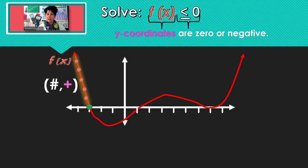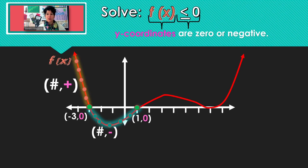Running through: those were positive, and there it's 0. Along here, negative. And right there, 0. So far, we have a y-coordinate of 0 at the x-intercept, y-coordinates that are negative, and a y-coordinate of 0.